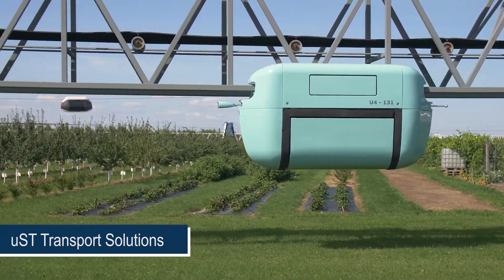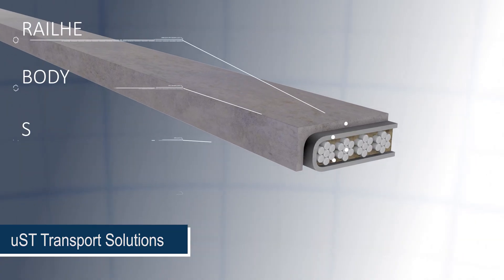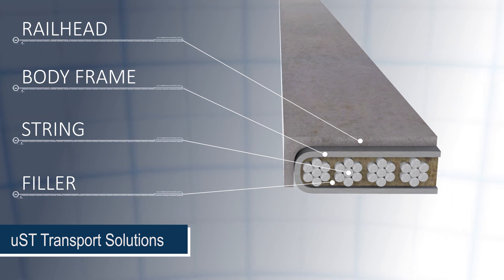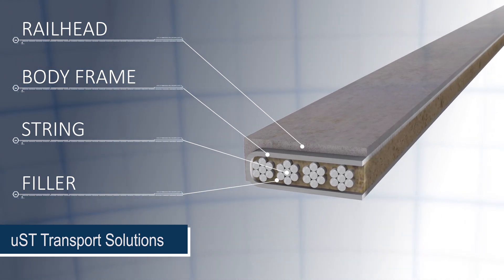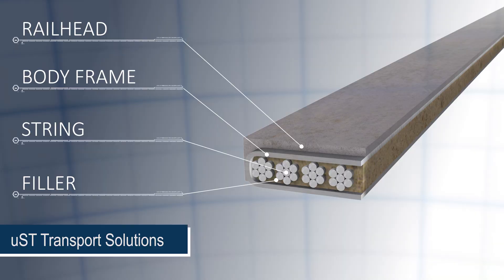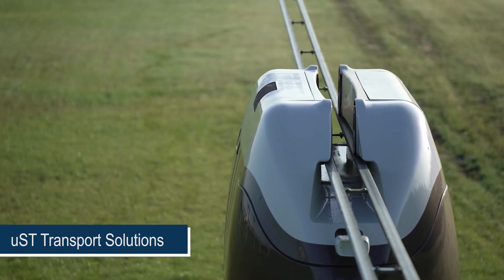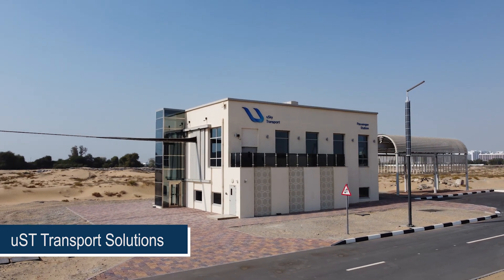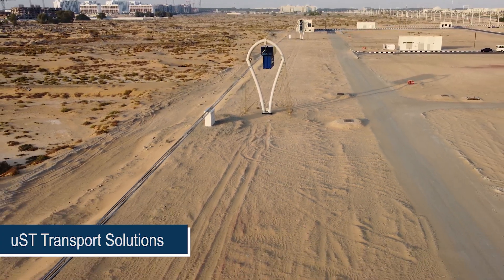A key element of the technology for creating pre-stressed transport overpasses by Unitsky String Technologies is a string rail. It is a steel or composite beam containing a bundle of wires — strings — pre-stressed with stretching in its core and fitted with a rail head. The horizontal load from stretching is taken by anchor supports installed at a distance of up to 5 kilometers from each other.